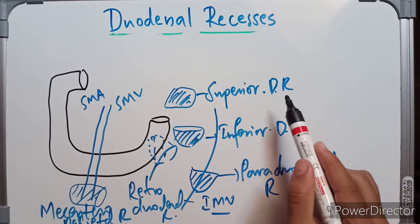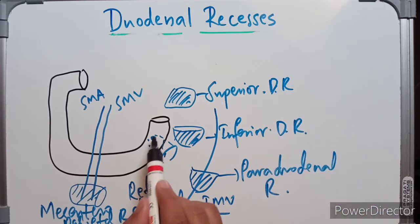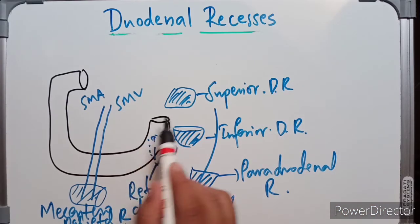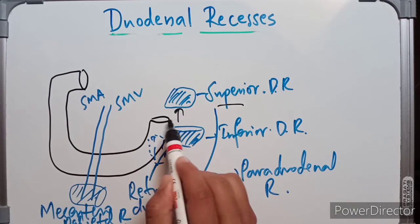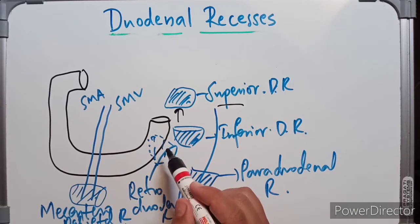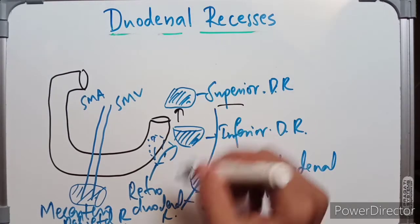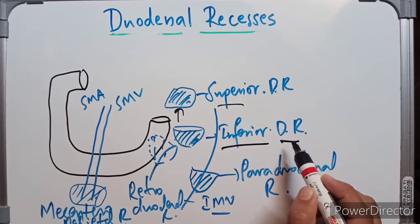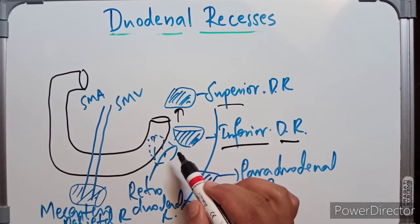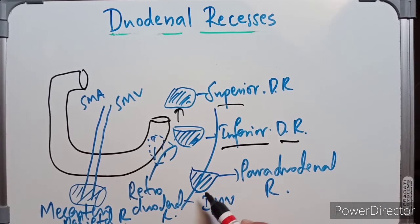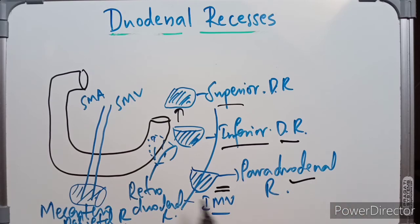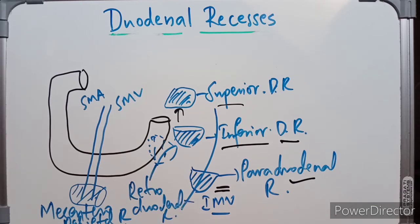The superior duodenal recess lies to the left upper end of the fourth part of the duodenum, behind the superior duodenal jejunal peritoneal fold, with its mouth looking downward. The inferior duodenal recess lies a little below the superior recess, behind the inferior duodenal jejunal peritoneal fold. The paraduodenal recess, when present, is the lowest, lying to the left of the fourth part of the duodenum behind the paraduodenal fold of the peritoneum.